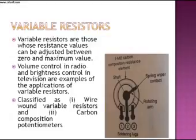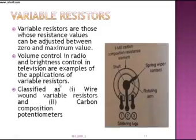Normally in variable resistors the value of resistance is changed from minimum value to maximum value. These variable resistances are normally used in radio for volume control and in television for brightness control. These are the most common applications of variable resistors and they are broadly classified as wire wound variable resistors and carbon composition potentiometers.